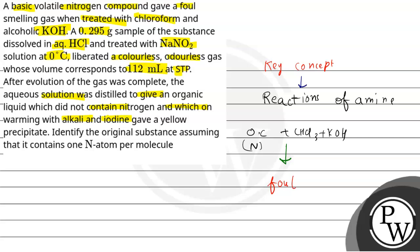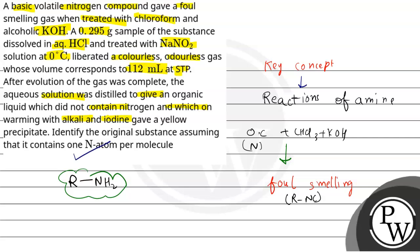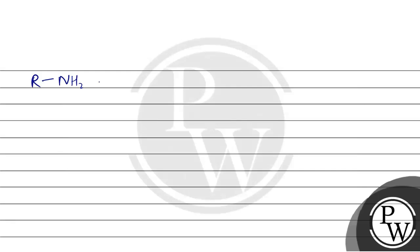First, we need to know what gives the foul smell here. The foul-smelling gas is isocyanide. The reaction that produces isocyanide is the carbylamine reaction, and it is given by primary (1°) amines. So the compound we have identified is a primary amine. Also important — the question states it contains one nitrogen per molecule, which is a key point to keep in mind.